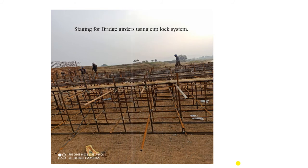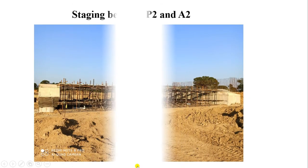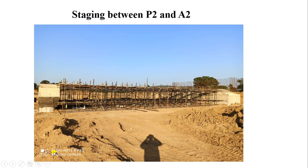Here the cuplock system is used for bridge girders — you can see that it is a cuplock system used for staging. This shows staging between pier 2 and abutment 2.